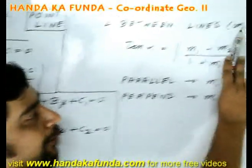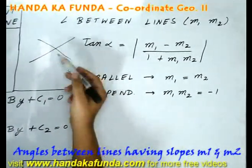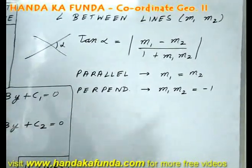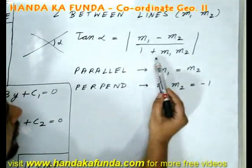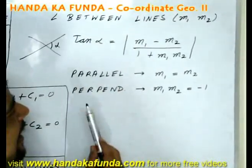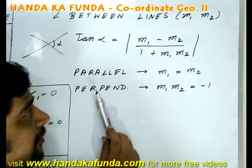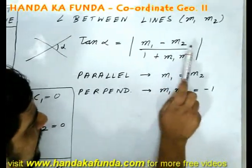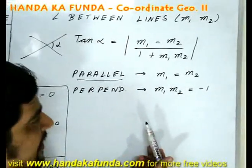Say I am given two lines and their slopes are m1 and m2. These two lines will make two angles with each other. Let us say the acute angle formed is alpha. Then tan of alpha is given by the mod of m1 minus m2 divided by 1 plus m1 m2. So if the two lines are parallel, alpha will be equal to 0, which means tan alpha will be 0. That will mean the numerator has to become 0, that is m1 minus m2 is 0, so m1 is equal to m2. And that is the condition for lines to be parallel to each other.